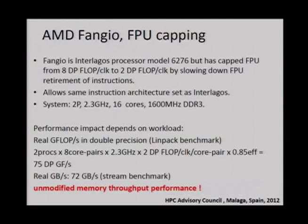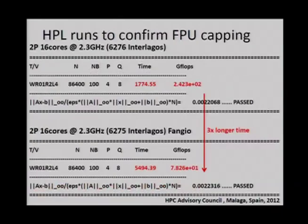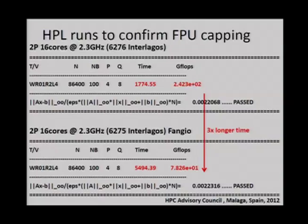But if I look at the bandwidth, I don't get any performance difference. The reason is because the cores are simply waiting to get the data — once they get it, they crunch it, so it doesn't matter if I'm slowing down the FPU. Looking at the measured numbers: Linpack shows about 250 gigaflops for the 6276 and only 78 gigaflops for Fangio — three times longer. But running the stream benchmark on the 6276 or the Fangio, I get a wide range between 66 to 73, and it doesn't change.